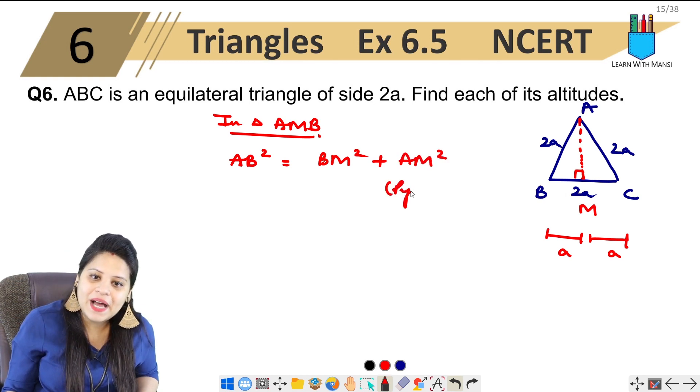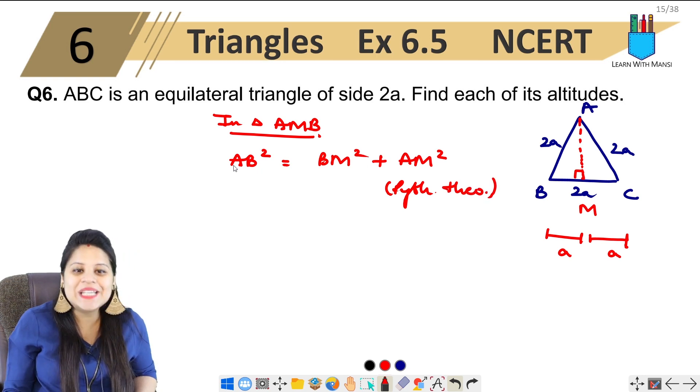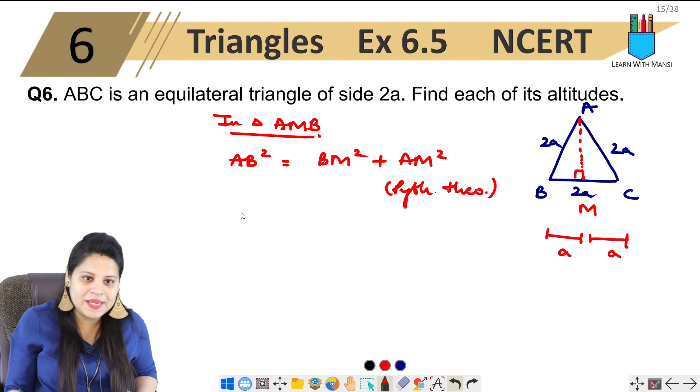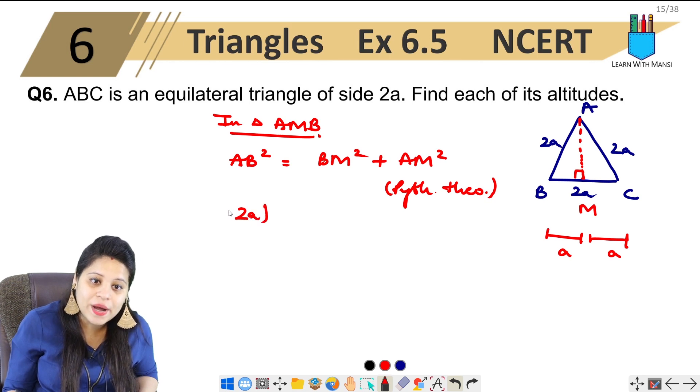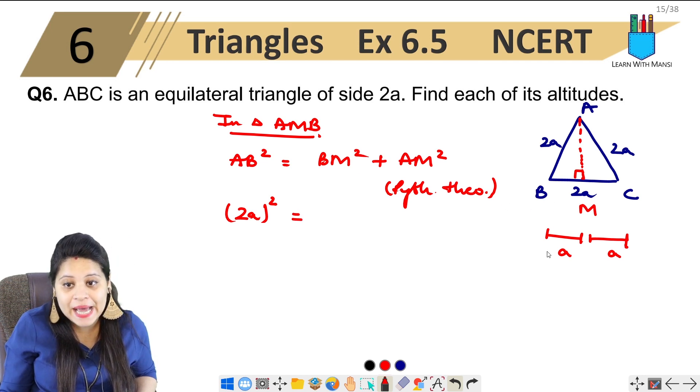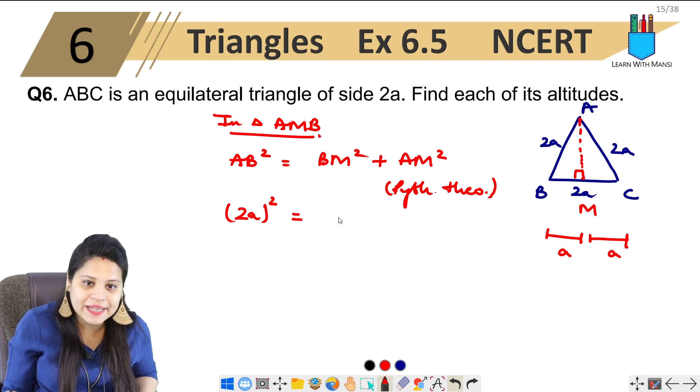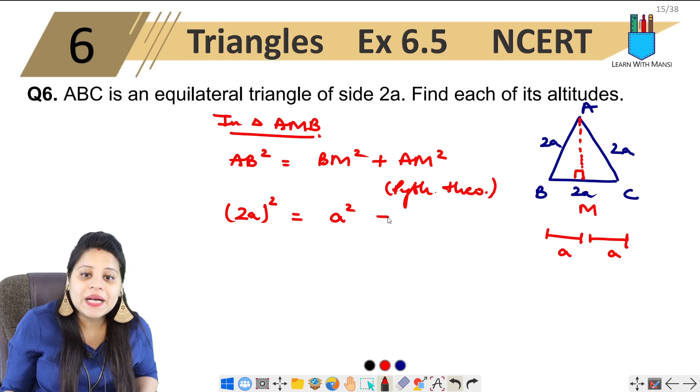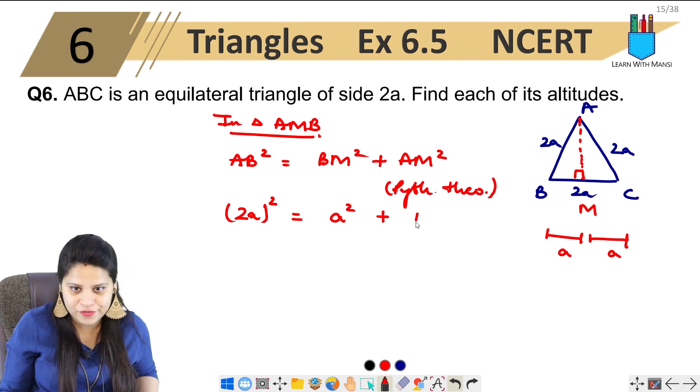Here we have Pythagoras theorem use. AB, AB is 2A square. We have to write it. Equals to BM. Now I have to tell you, I have to divide it, A square, plus AM. Find it.